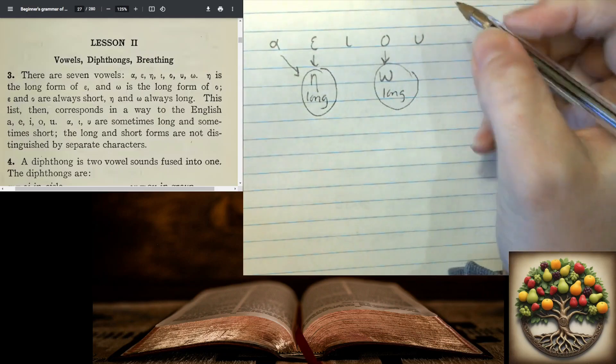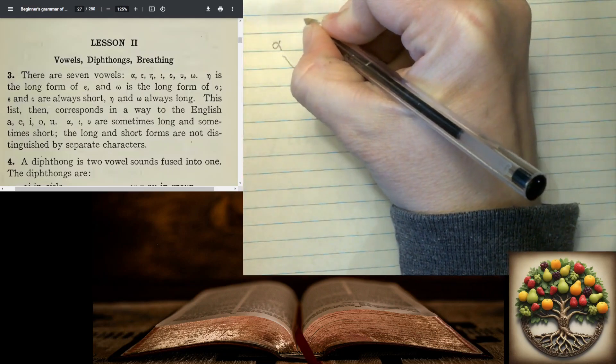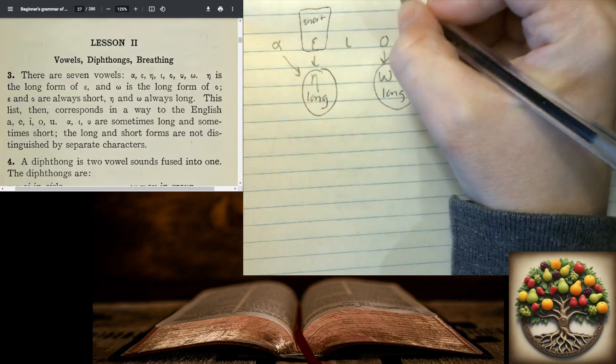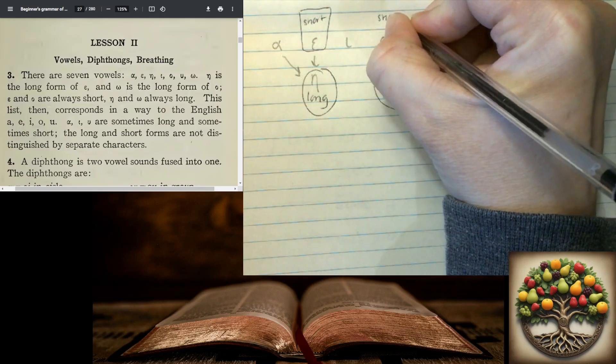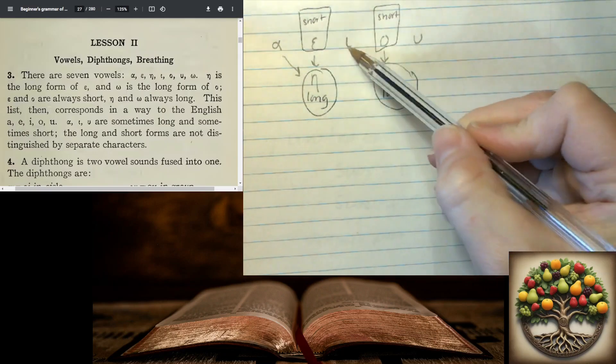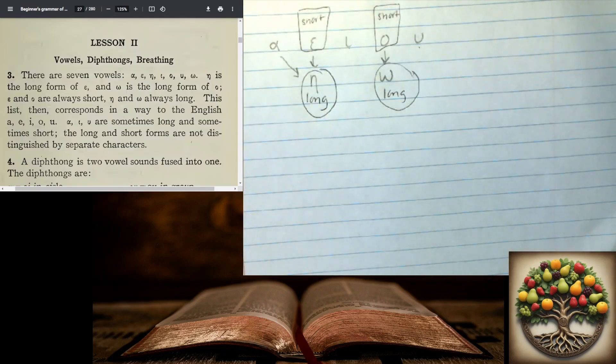Now the eta and the omega are always long, which means that these are going to be always short. And our alpha, iota, and upsilon are going to be sometimes long and sometimes short. And those are not going to be distinguished.